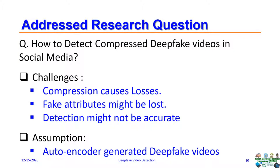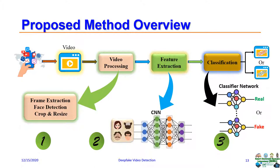The challenges we had: since compression causes data loss, fake attributes might be lost and detection might not be accurate. The assumption we made: deepfake videos are generated by autoencoders.